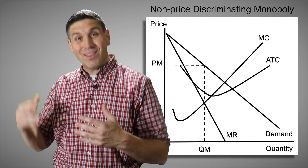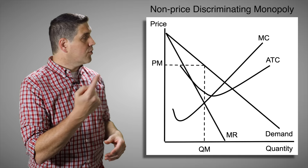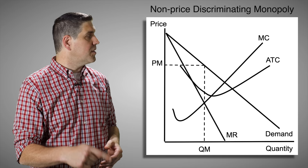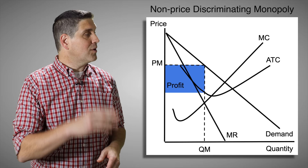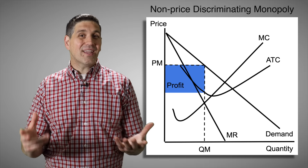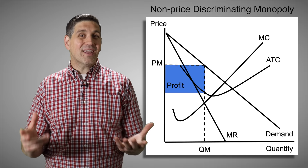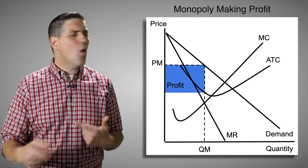These side-by-side graphs for perfect competition are from unit three. You take those same concepts to draw monopolies, monopolistic competition, and oligopolies in unit four. For a non-price discriminating monopoly, the difference is a downward sloping demand curve with a downward sloping marginal revenue curve. The marginal cost and average total cost are exactly the same shape. You find the quantity where MR equals MC, and you can find a box of profit the same way as in perfect competition. In a monopoly, the market is the firm, so there are no side-by-side graphs.